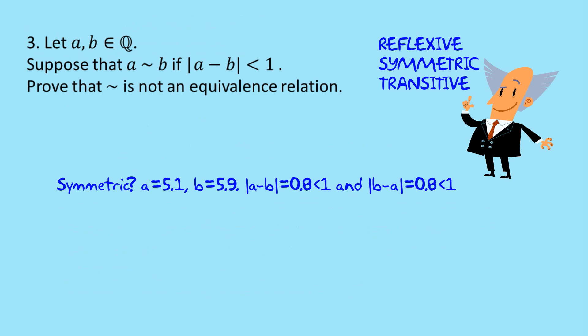What about symmetry? Well, I've just picked two random numbers, 5.1, 5.9, that are reasonably close. I see that the difference, the distance is 0.8, which is less than one. And if I change it around the other way, well, the distance doesn't change, or if you like, the absolute value function doesn't care whether it's a minus b or b minus a, we still get 0.8. And that will also be less than one. So I think I'm going to find it difficult to put a symmetry argument together to prove that the relation is not an equivalence relation. So it's probably going to be transitivity. So let's have a look at that.